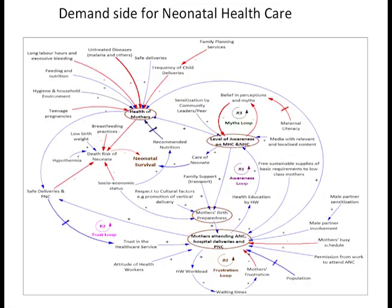Overall, causal loop diagrams provide a holistic view of the system. They help us see what the different variables are and how they relate to each other — whether positively or negatively. They also help us identify what data is missing, what factors are missing, and when designing interventions, we're able to propose interventions that involve and are relevant to all stakeholders.